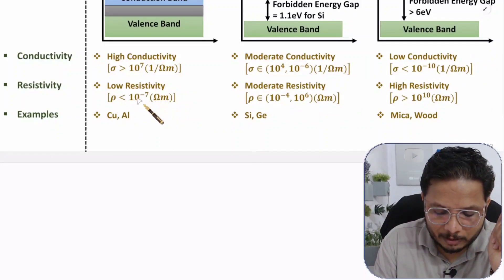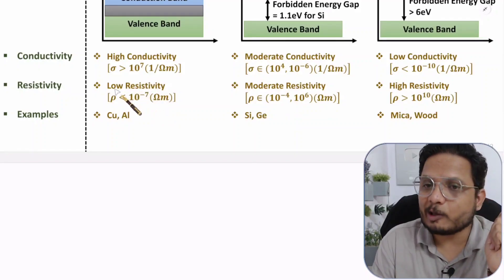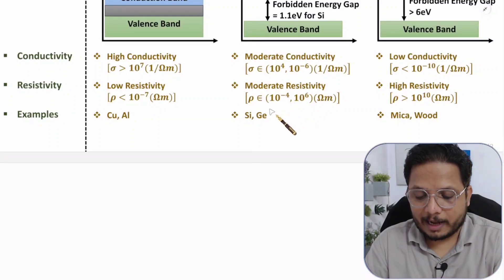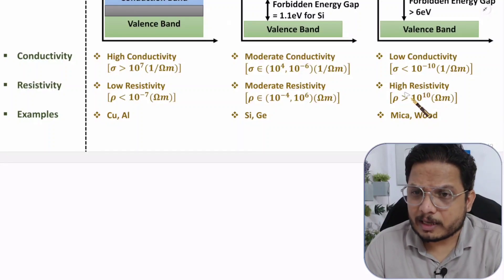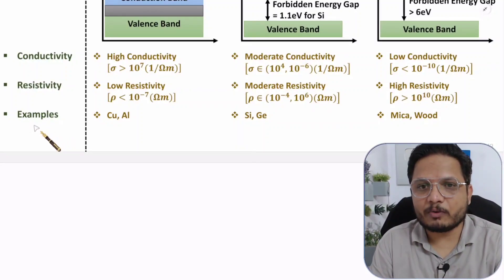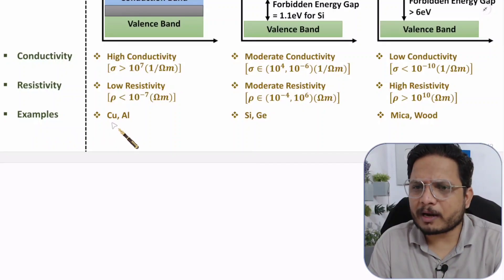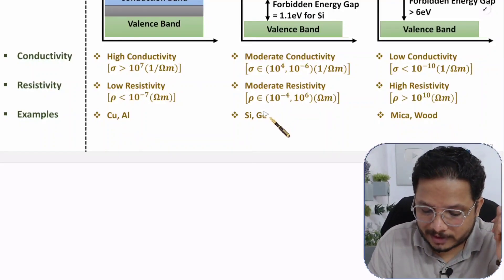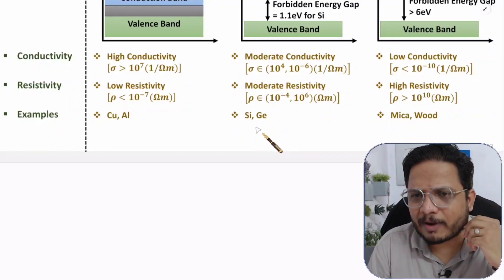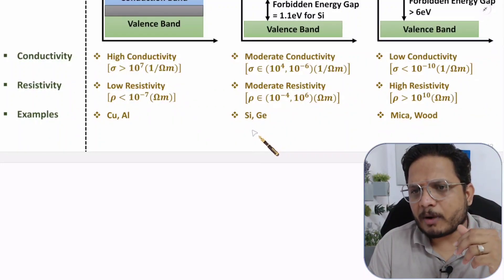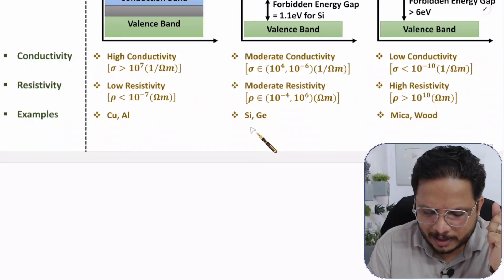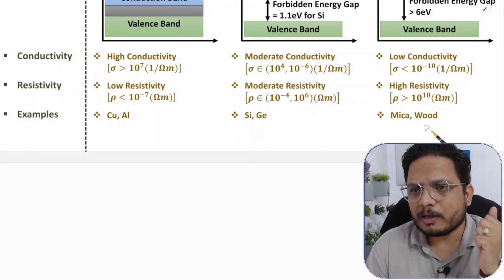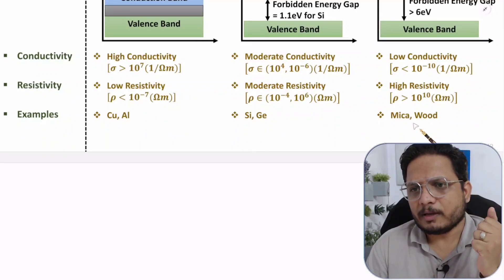So resistivity for a conductor will be lower than 10⁻⁷ ohm-meter. Moderate resistivity will be there with semiconductor material and high resistivity with insulating materials. Examples include copper and aluminum as conductors, silicon and germanium as semiconductors — semiconductor chips today are made of silicon — and mica and wood as examples of insulating materials.